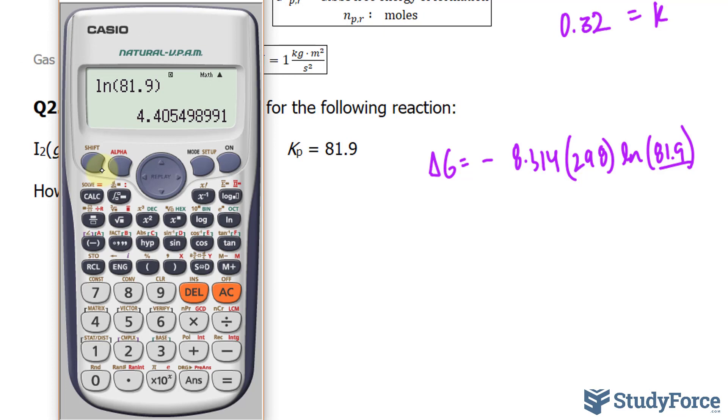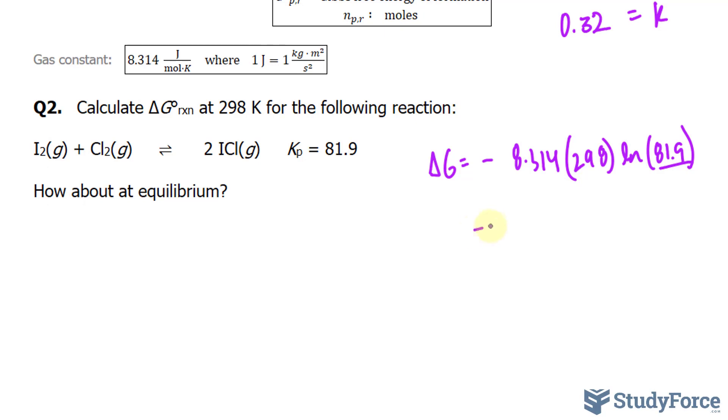Technically, we have four significant figures in this number. Multiply to negative 8.314 times 298, and that gives us to four significant figures, negative 10, 9, 1, 4. This 4 is insignificant, so I'll write down negative 1.091 times 10 raised to the power of 4.